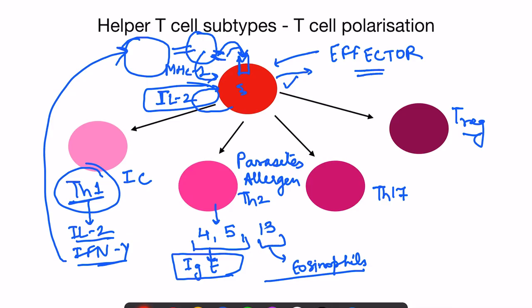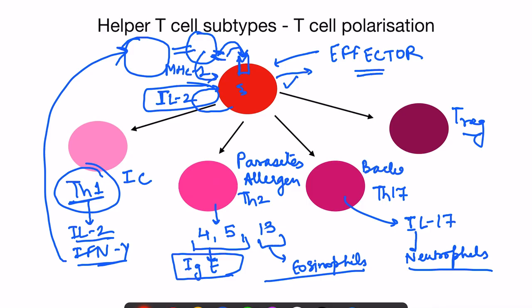Th17 cells — as the name suggests — secrete interleukin-17, which is important for the recruitment of neutrophils. This Th17 subset forms in the presence of bacterial and fungal infections.